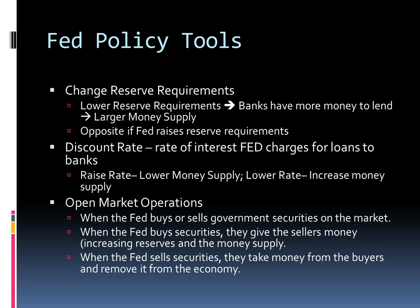The second tool is called the discount rate — the rate of interest that the Fed charges banks. If the Fed raises the discount rate, banks will borrow less from the Fed and make fewer loans, decreasing the money supply. If the Fed lowers the discount rate, banks will borrow more and make more loans, increasing the money supply. However, the discount rate is mostly symbolic because borrowing from the Fed makes a bank seem like it's in trouble. The rate more commonly used is the Federal Funds Rate — the interest rate banks charge each other for overnight loans, usually to meet the reserve requirement by a deadline.